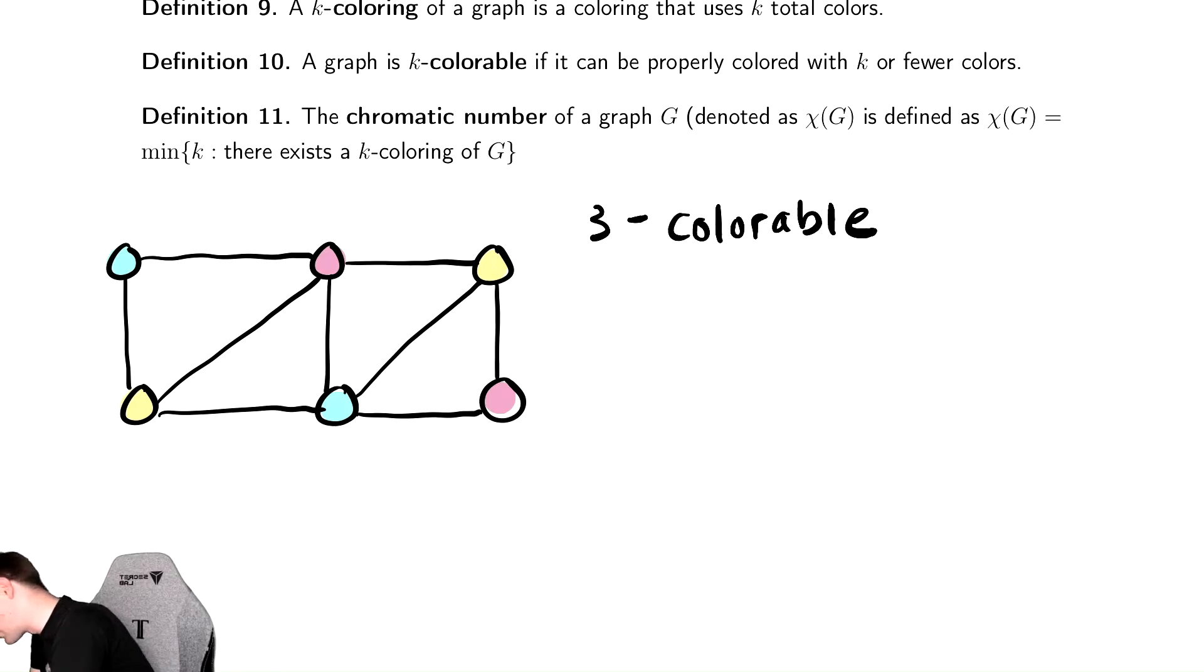There are these three vertices here that are all connected to each other. There's no way I can color those without using at least three colors. There are other things you can try to prove about when you need a certain number of colors, but they are pretty difficult it turns out.